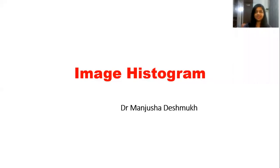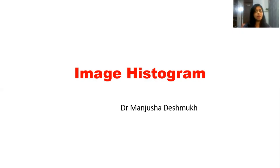Hello everyone. In this lecture I am going to explain Histogram of an Image, also known as Image Histogram. A Histogram is a graph of distribution of data. An Image Histogram is a graphical representation of tonal distribution in a digital image. The Histogram plots the number of pixels for each tonal value.